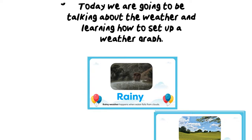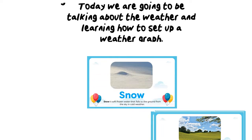Rainy. Rainy weather happens when water falls from the clouds, and you might remember last week we had a couple days where there was rainy weather. And snow — snow is soft, frozen water that falls to the ground from the sky in cold weather, and I hope that we are just about done with snow for right now.